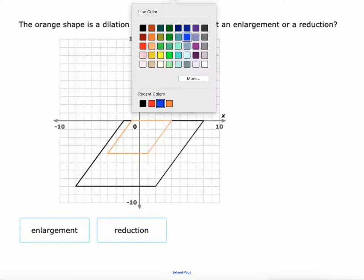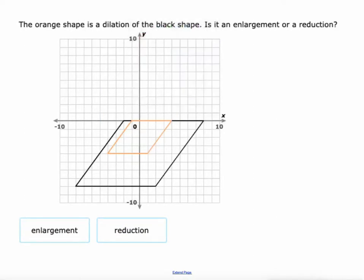Is this orange shape an enlargement or a reduction of the black shape? So the black is the original. The orange, which is smaller, is a reduction of the original by a certain scale factor. And we'll talk about the scale factors now.